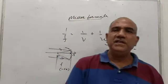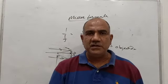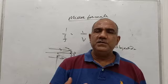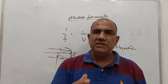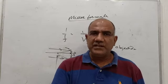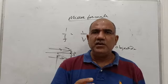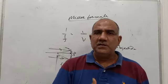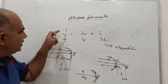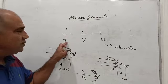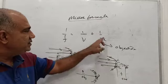In this class we are going to study the mirror formula for spherical mirrors. The mirror formula establishes the relationship between focal length, image distance, and object distance. The formula is: 1/f = 1/v + 1/u, where f is the focal length, v is the image distance, and u is the object distance.